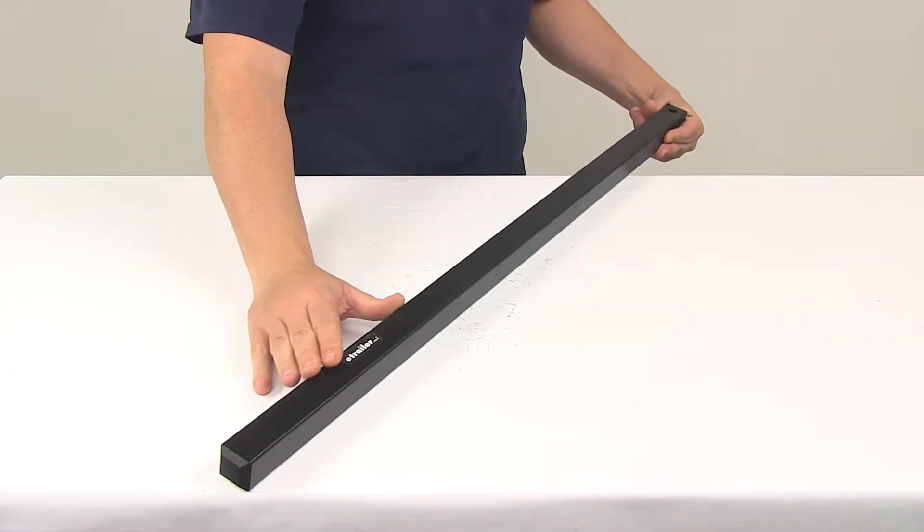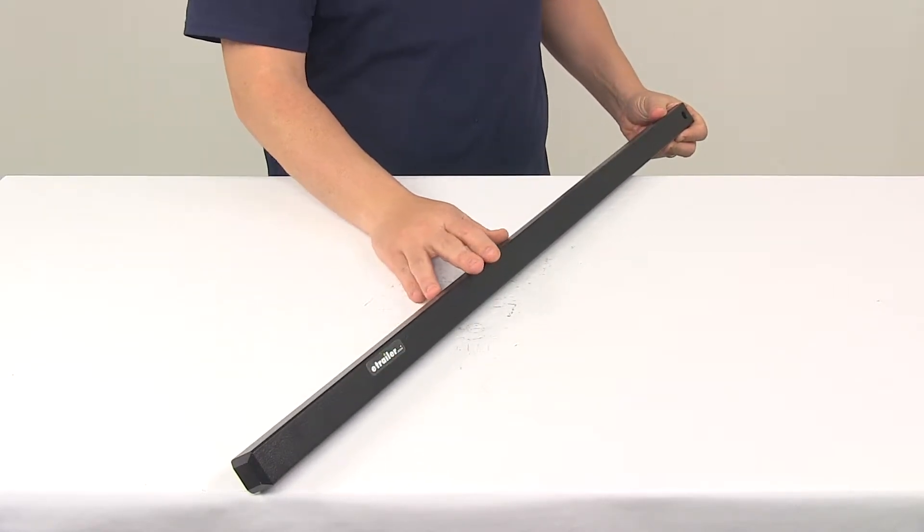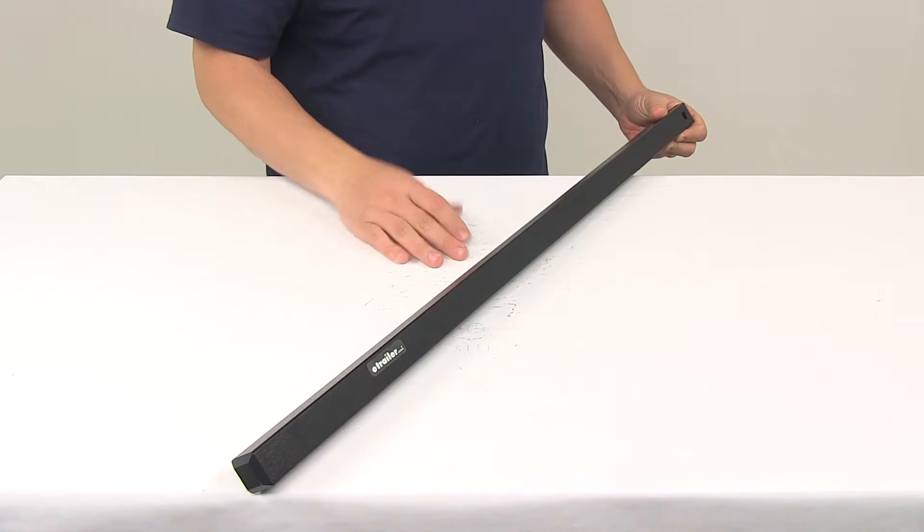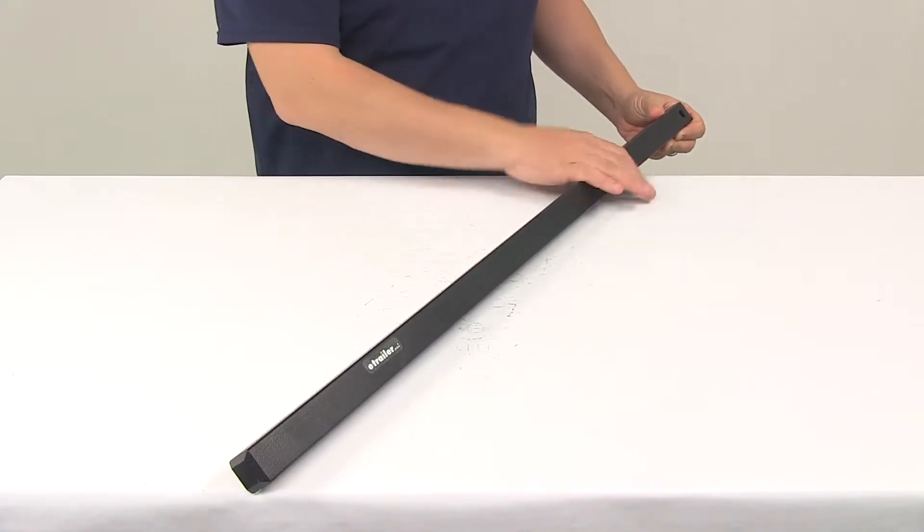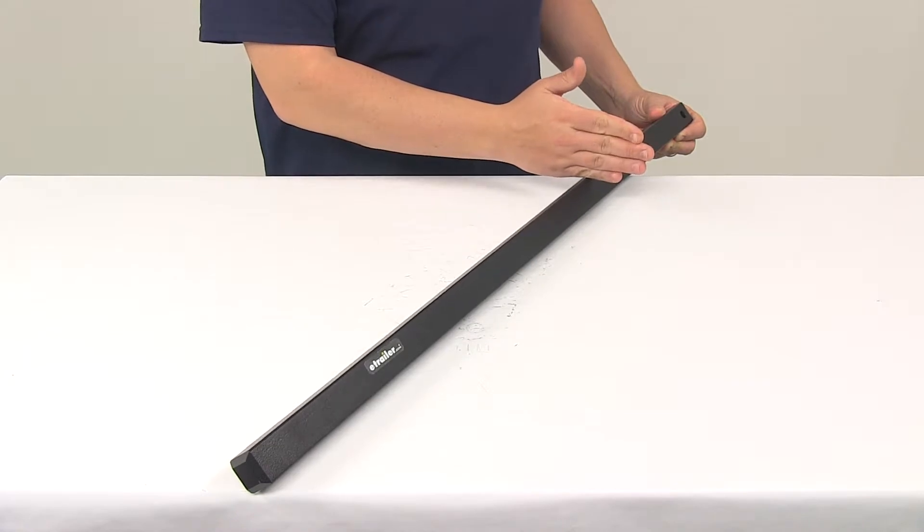The unit's constructed of forged steel construction and has a black powder coated finish on the steel, very durable as well as corrosion resistant. This bar is going to feature a tongue weight capacity of minimum 800 pounds,